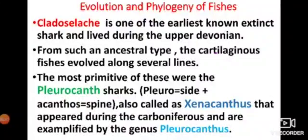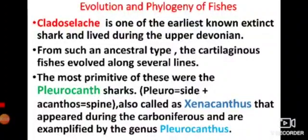The word 'pleuro' means side or lateral, and 'acanthos' means spine. The pleurocanth shark is called Xenacanthus, and they appeared during the Carboniferous period. The example of the pleurocanth shark is the genus Pleuracanthus.